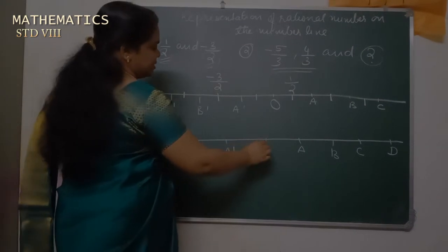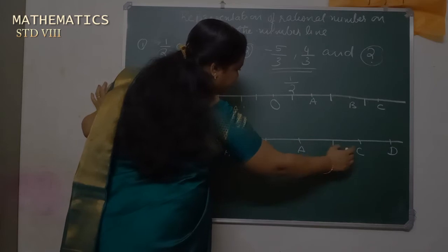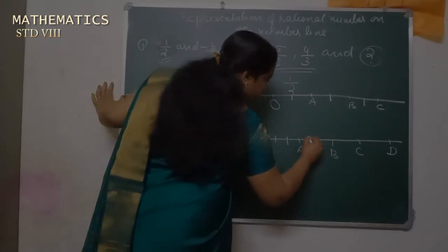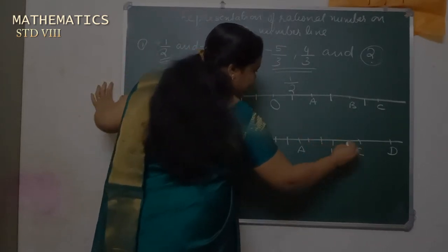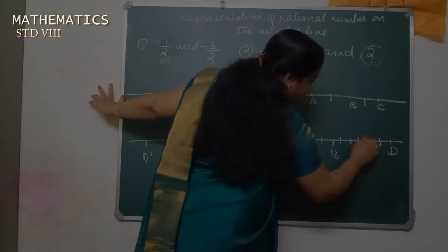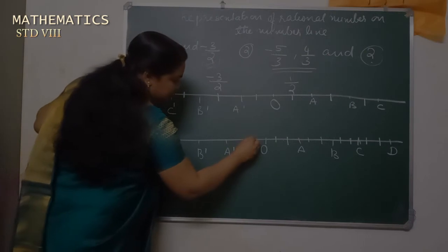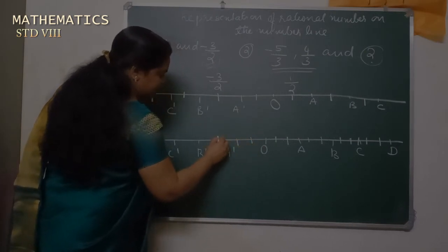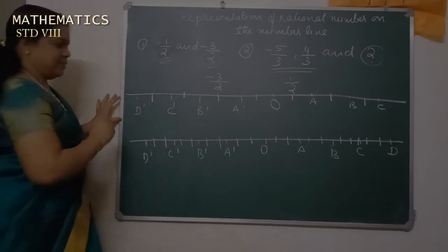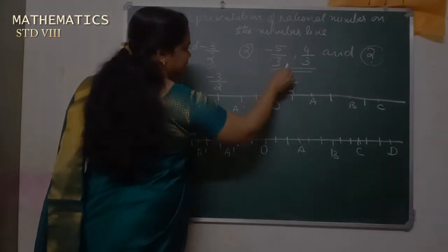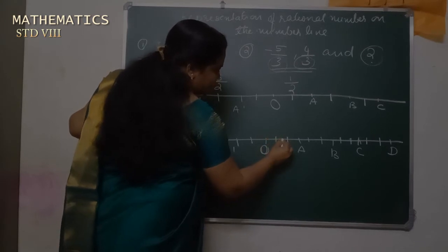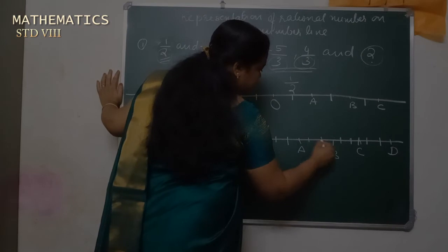We divide the distance between O and A, A to B, and B to C into 3 equal parts. Similarly on the left side, each interval is divided into 3 equal parts. So from the origin, we have 3 equal parts, then from A to B another 3 equal parts, and so on in both directions.